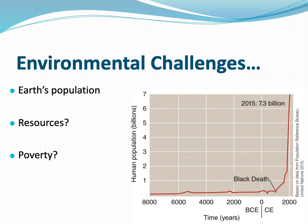The population stayed pretty constant through that time period until after 0 BC. You can see a little blip when the Black Death plague happened in Europe, and then in the most recent history — the last 800 years or so — you see a huge spike in population. What's recorded on this graph is that in 2015 there were 7.3 billion people on the earth.